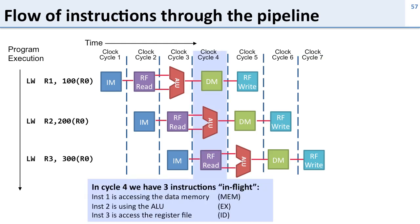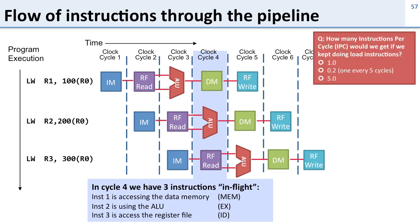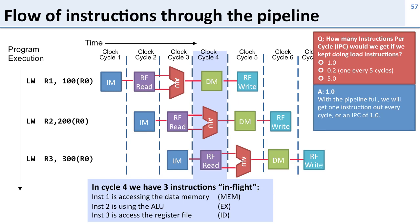The benefit of the pipeline is this: in cycle four we have three instructions in flight. The first load instruction is accessing the data memory in the MEM stage, the second instruction is using the ALU to calculate the address in the execute stage, and the third instruction is accessing the register file in the instruction decode phase. Because we have three instructions using three different parts of the processor at the same time we get better performance. If the pipeline is full we'll finish one instruction every cycle — an IPC of 1.0.